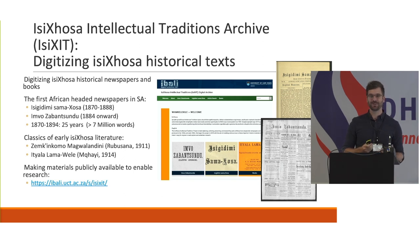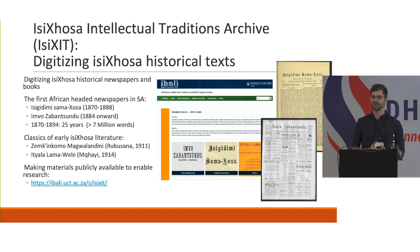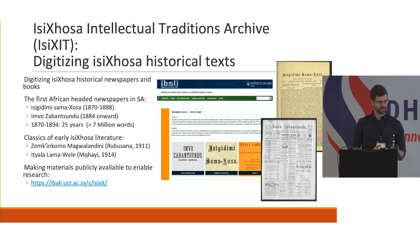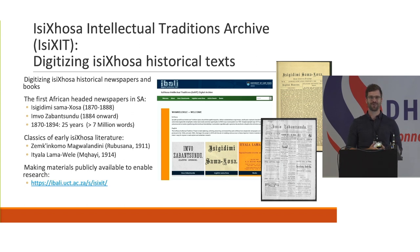First, I want to tell you about the data underpinning this talk and the digitizing work we're doing. I'm involved with a larger team at UCT — Sunyan is here, also involved in this project. We're digitizing early historical Isixhosa texts, both newspapers and books. What we have so far are the first African-headed newspapers in South Africa: Isigadimi SamaXhosa and Imvo Zabansundu, two early and important Xhosa newspapers. So far we've collected 25 years of newspapers, hosted online, running from 1870 to 1894 — over 7 million words of newspapers. But this is something we really want to grow; there are other newspapers we want to continue to digitize and expand the scope. This is still very much in progress, but some progress is being made.